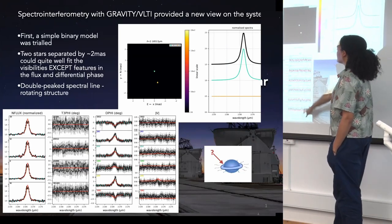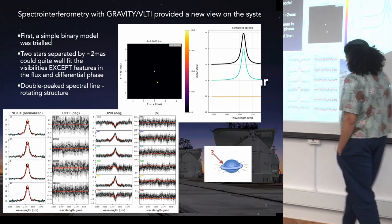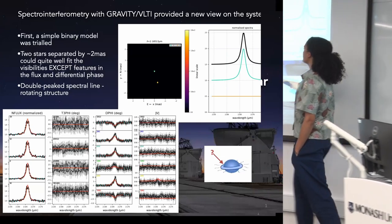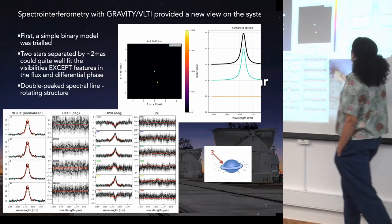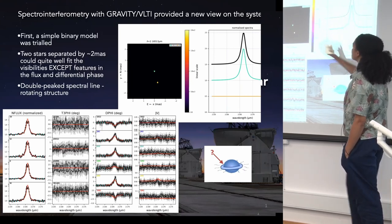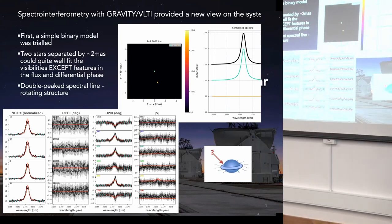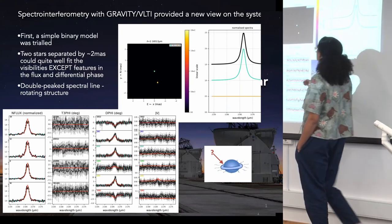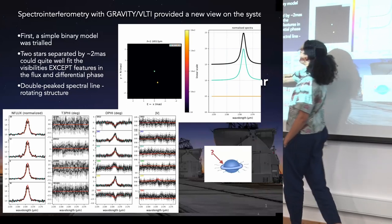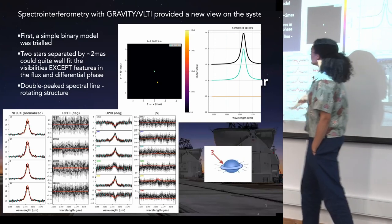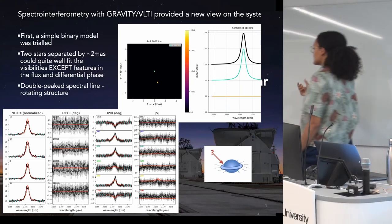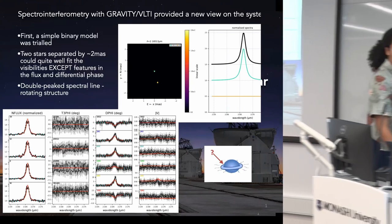Here again, the observables I mentioned: we have the visibility amplitude for spatial extent, and our phases which tell us about the asymmetry. This was the first simple model we tried: for an initial model, we have two point sources relating to two stars. In one star — the brightest star in the system, the primary — we have this bracket gamma line or Lorentzian line profile. This provided an okay-ish fit to the data. It seems the separation is reasonable and there are two stars in the system at this milli-arcsecond scale. However, we're not perfectly recreating the features in the differential phases and fluxes. In particular, we can see a double-peaked profile in the bracket gamma line, which is indicative of rotation. If you've got something rotating, then maybe you have a disk.